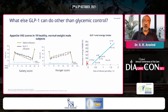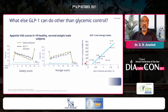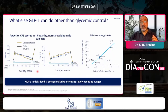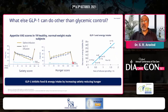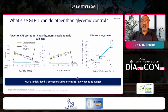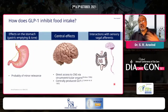We have now moved away from a glucose-centric view to see what GLP-1 can do beyond controlling sugar values. Very interestingly, it has a powerful action on satiety — it tremendously improves the satiety score and reduces the hunger score. These graphs clearly show how satiety increases and hunger comes down with GLP-1. It also reduces energy intake. So GLP-1 actually inhibits food and energy intake by increasing satiety and reducing hunger.